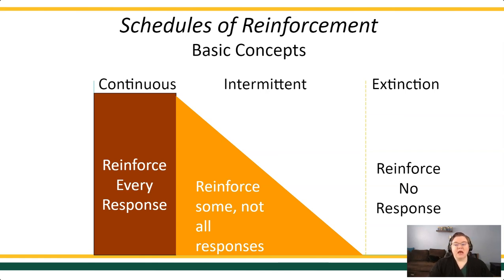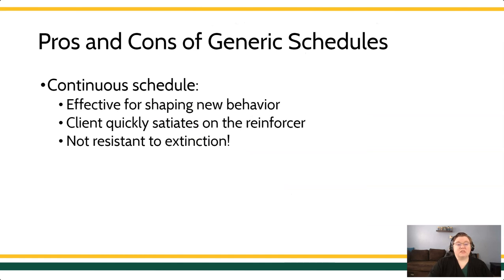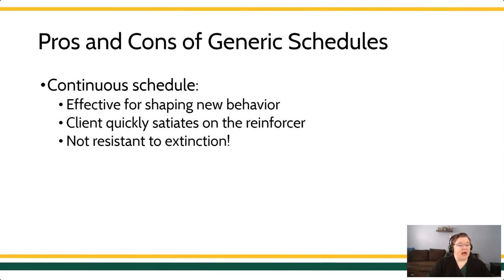Extinction refers to a schedule where no responses are reinforced. There are some benefits to these different schedules. A continuous schedule is really effective for teaching and shaping new behavior, but it's problematic because the client earns a lot of the reinforcer and satiates very quickly — they're no longer motivated because the reinforcer loses its value. Continuous schedules of reinforcement are also not very resistant to extinction, so if the reinforcer isn't delivered with fidelity, the response can become very shaky and may disappear entirely.